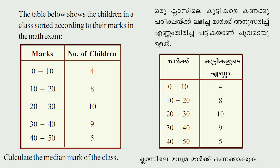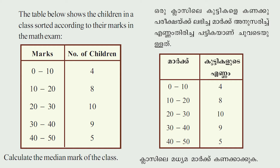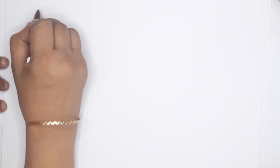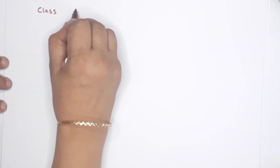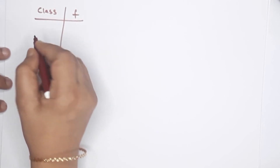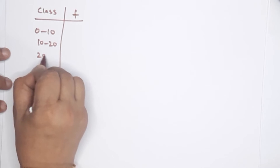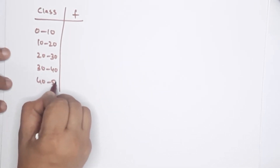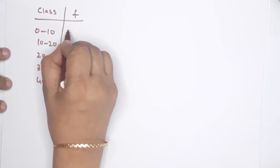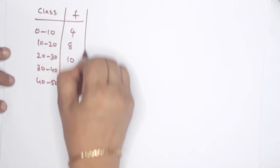Second question: The table below shows the children in a class sorted according to their marks in the maths exam. Calculate the median marks of the class. The classes are: 0 to 10, 10 to 20, 30 to 40, 40 to 50. The corresponding frequencies are 4, 8, 10, 9, and 5.